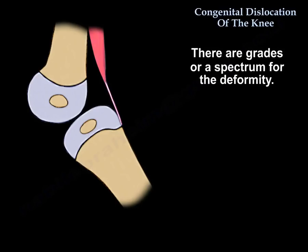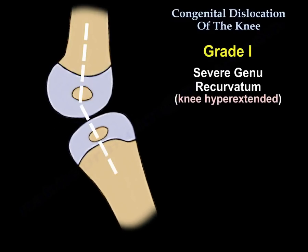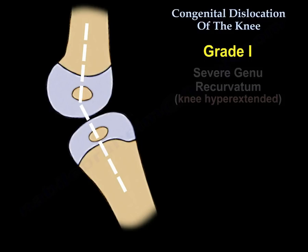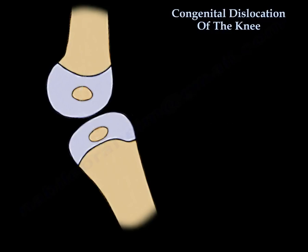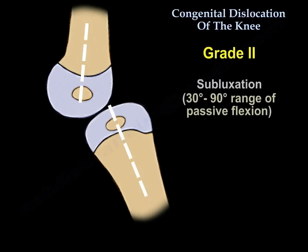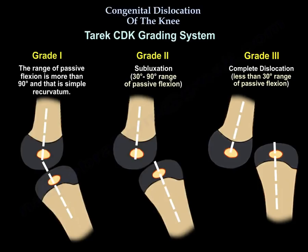There are grades or a spectrum for the deformity. Grade one is severe genu recurvatum, where the range of passive flexion is more than 90 degrees — this is simple recurvatum. Grade two is subluxation, with a range of passive flexion from 30 to 90 degrees. Grade three is complete dislocation, with less than 30 degrees of passive flexion. This is the Tariq grading system.